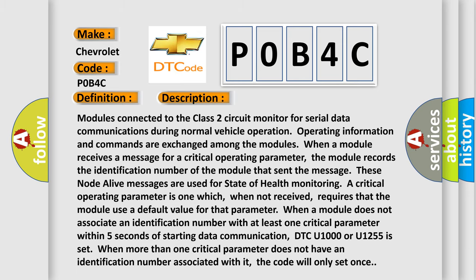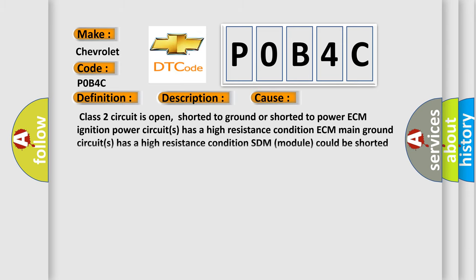This diagnostic error occurs most often in these cases: Class 2 circuit is open, shorted to ground, or shorted to power. ECM ignition power circuits have a high resistance condition. ECM main ground circuits have a high resistance condition. The SDM module could be shorted, pulling the voltage low.